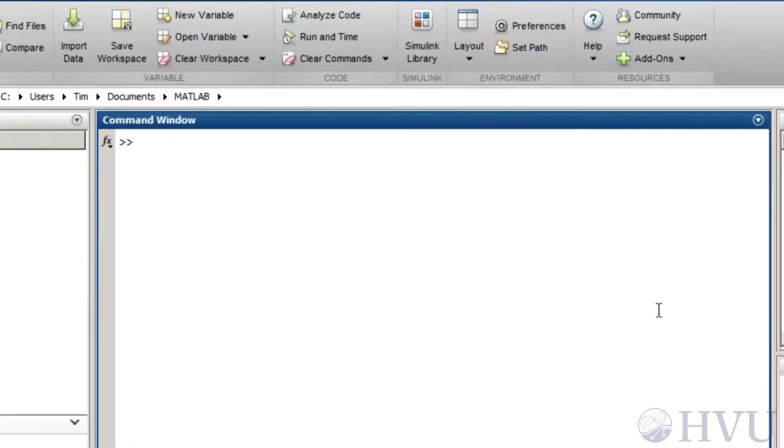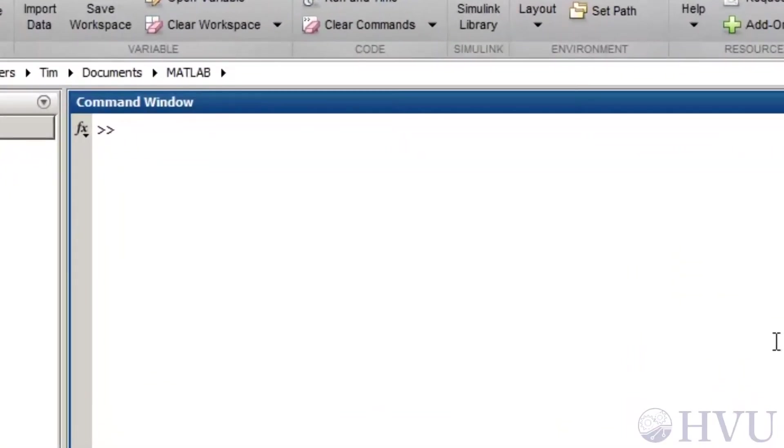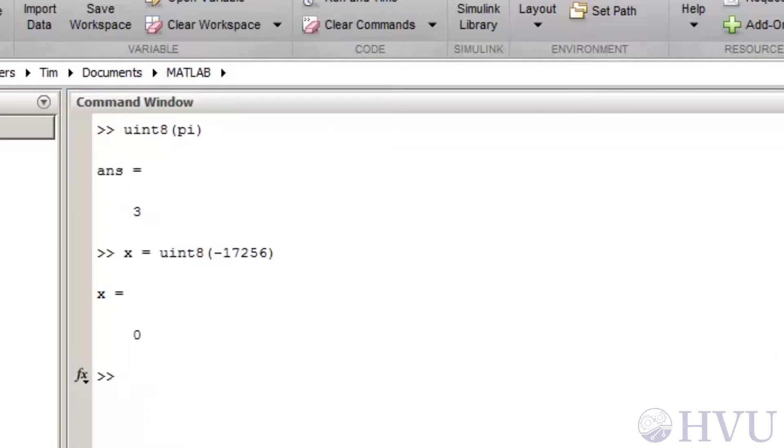Now I'll do a couple of quick demos in MATLAB. Let's create some integers and see what happens. First, I'll convert pi to an unsigned 8-bit integer by typing uint8 of pi. The result is 3. MATLAB throws away the fractional part of the number. Now I'll create a variable x, which is an unsigned 8-bit integer version of negative 17,256. Since unsigned integers can't be used to represent negative values, the result is 0.